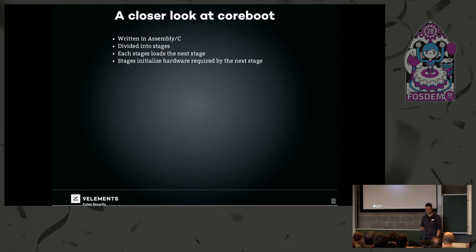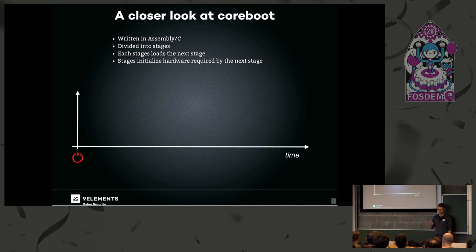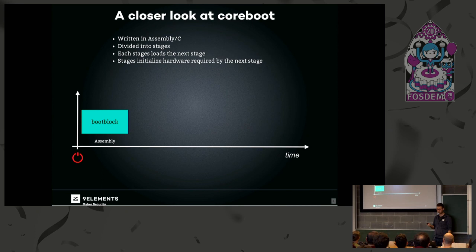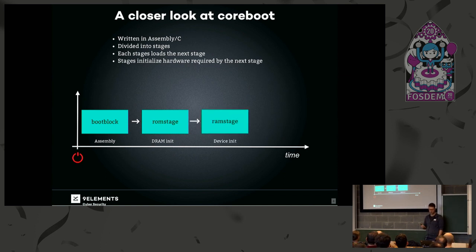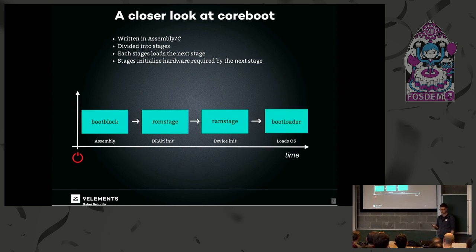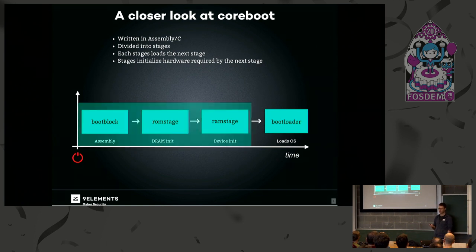If you look at CoreBoot, it's written in assembly and C code and divided into multiple stages. Each stage loads the next stage, and every stage has specific hardware initialization. If you press the power button, first is the boot block written in assembly, which loads the ROM stage that does the DRAM init. Once the DRAM is available, we can initialize other devices like PCI, PCI Express, and so on. After that, the payload is loaded into memory, and that loads the operating system. I only care for the first stages.